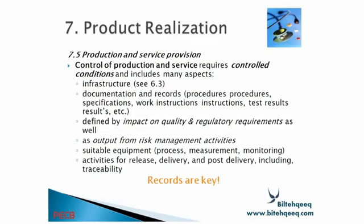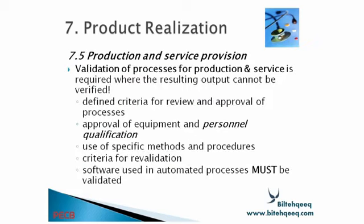Section 7.5 is related to production and service. Control of production and service requires controlled conditions involving many aspects: infrastructure, documents and records, procedures, specifications, work instructions, test results defined by impact on quality and regulatory requirements, risk management activities, suitable equipment, process management, monitoring, and activities for release, delivery and post-delivery including feasibility. You have to manage all these things in a controlled environment and keep records of all these controls.